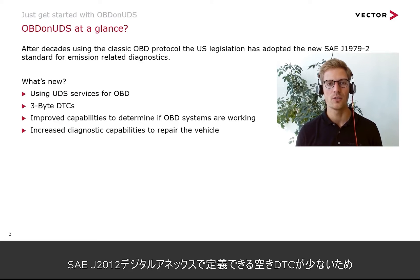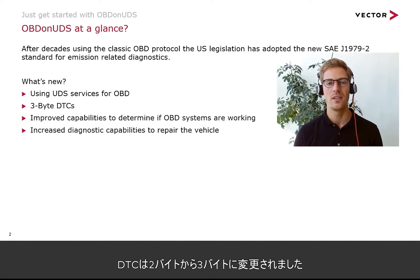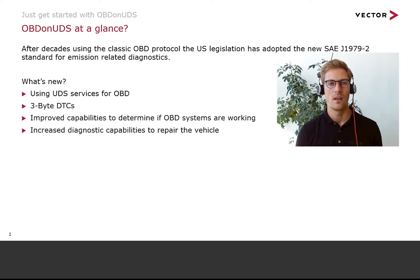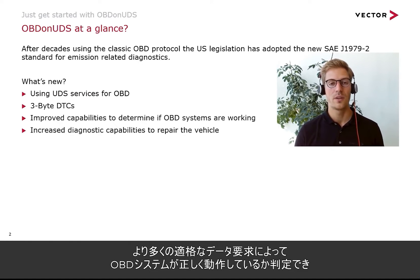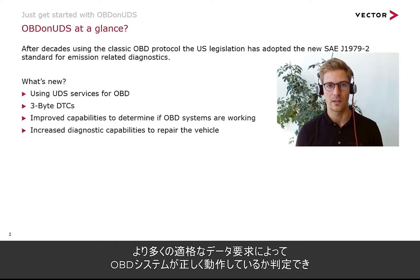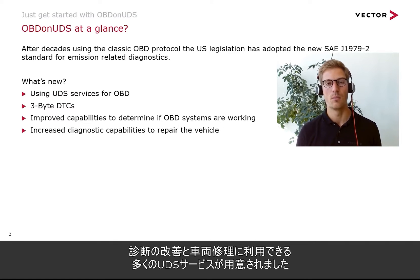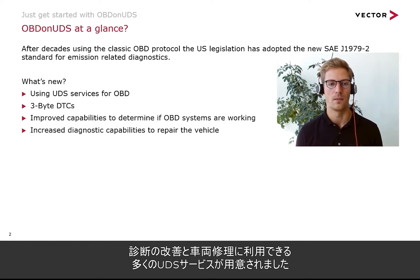There's a change from 2-byte DTCs to 3-byte DTCs, as the range of DTCs defined in SAE J2012 Digital Annex becomes too short. Further, request of more qualified data is possible to determine if OBD systems are working correctly, and more UDS services are available to improve diagnostics and repair of a vehicle.